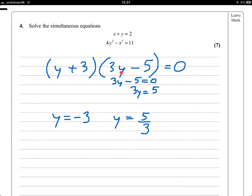So either y is minus 3, or y is 5 thirds. Unsurprisingly, at this stage, if I get them both correct, I get an accuracy mark.